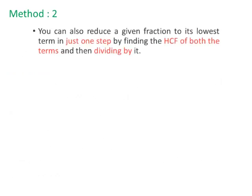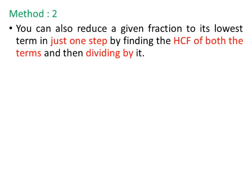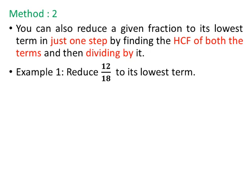Method 2: You can also reduce a given fraction to its lowest term in just one step by finding the highest common factor of both terms and then dividing by it. Example 1: Let us reduce 12 upon 18 to its lowest term. First, we find the HCF of 12 and 18. Common factors of 12 and 18 are 1, 2, 3, and 6. The HCF of 12 and 18 is 6.